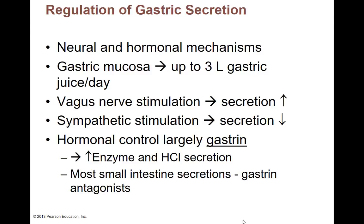To regulate all these secretions, we've got several things that control how much gastric juice we make and when to stop. We make three liters of gastric juice a day. Part of this is the nervous system triggering your stomach to start making it, and some of it is hormonal. The big hormonal one is gastrin, which triggers the making of all these gastric juices.